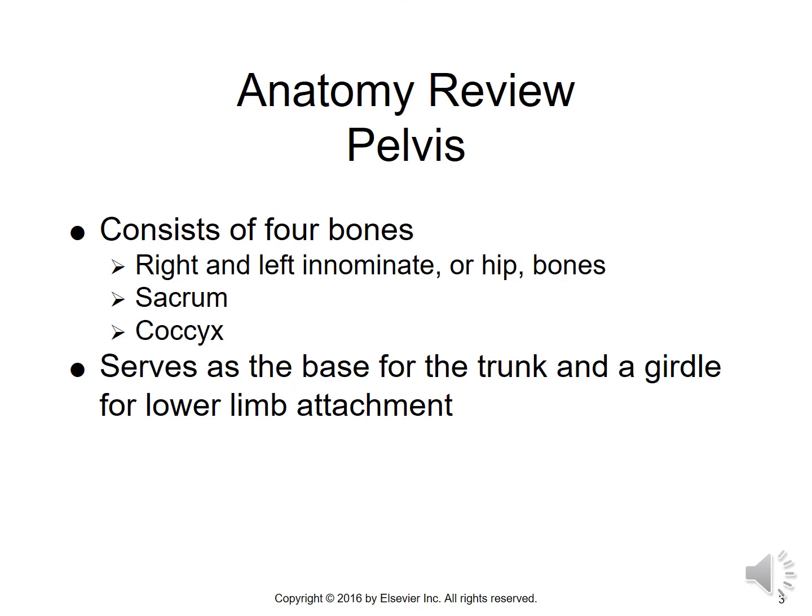When we talk about the pelvis, it consists of four bones: a right and left innominate or hip bone, a sacrum, and a coccyx. The pelvis serves as the base for the trunk and a girdle for the lower limb attachment.